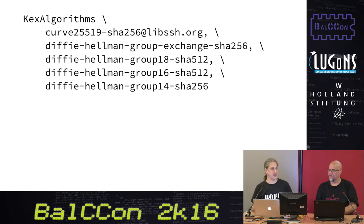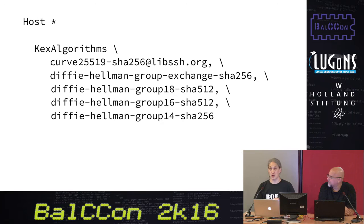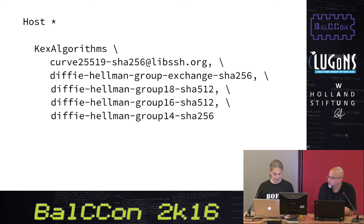The Curve25519 is the Daniel Bernstein curve — it's really fast and it's a safe curve. The others serve as a fallback depending on what your server, Wi-Fi LED bulb, or toaster supports. This is how you enter this in your SSH config file on the client: you have the Host asterisk, which is your generic configuration that applies to all your host entries, and you just put that in on a single line.